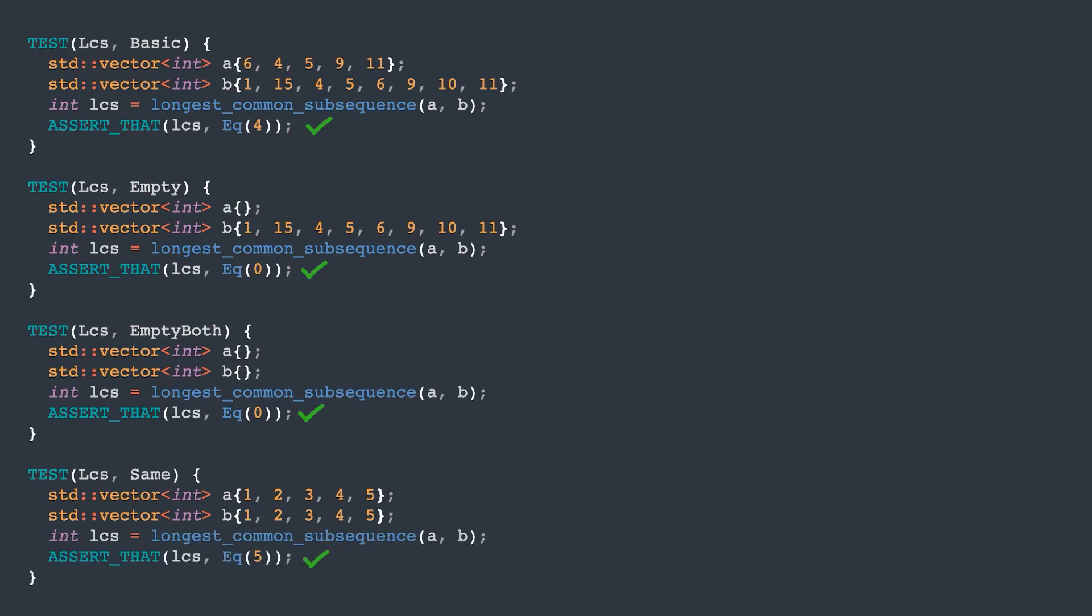You may be wondering how this can help us find the difference between two text files. After all, we only know the length of the longest common subsequence, which is not very useful on its own. It would be better if we could find which elements are part of the longest common subsequence. How can we do that?